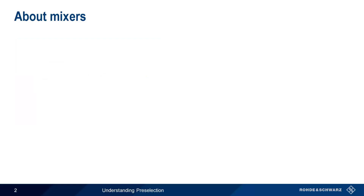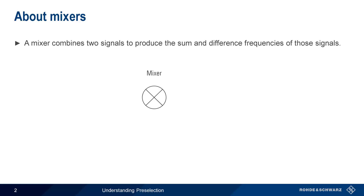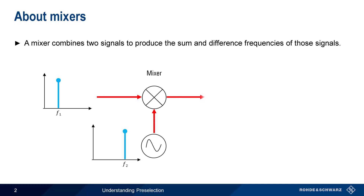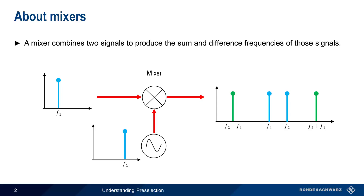In order to understand preselection, we first have to understand what mixers are and how they're used in spectrum analyzers and EMI receivers. A mixer is a device that combines or mixes two signals to produce signals at the sum and difference frequencies of those two signals. For example, if our mixer combines an input tone at 200 MHz and a local oscillator at 300 MHz, then the output will also have signals at the sum, 500 MHz, and the difference, 100 MHz, of these two frequencies.